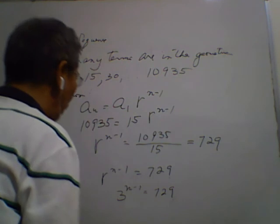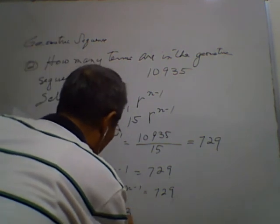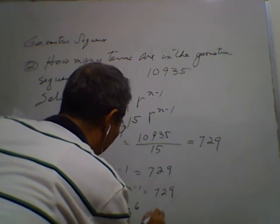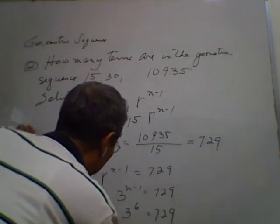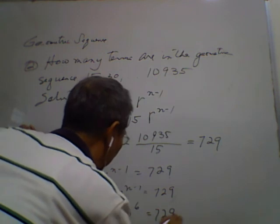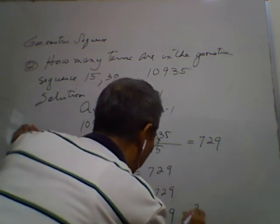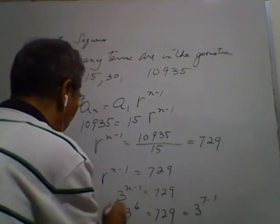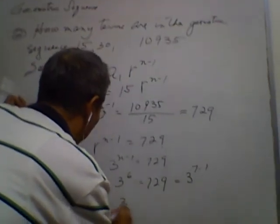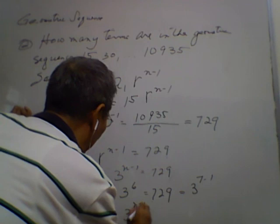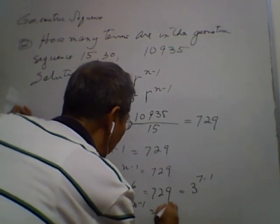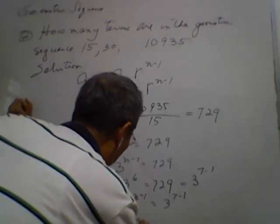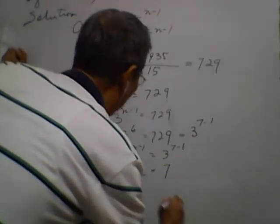And we know that 3 to the 6 is equal to 729, and that will be equal to 3 to the 7 minus 1. So, if we will compare, n minus 1 is equal to 6, and n should be equal to 7.